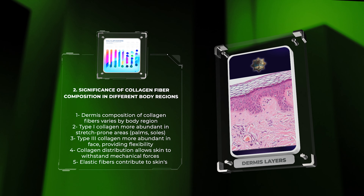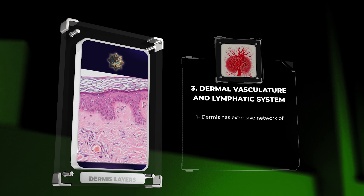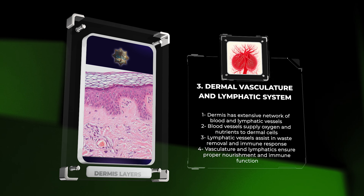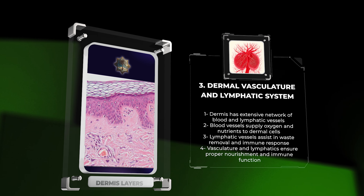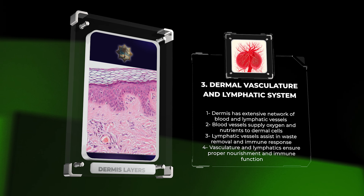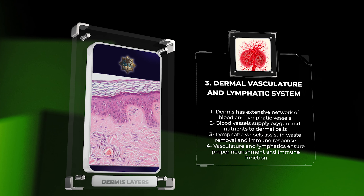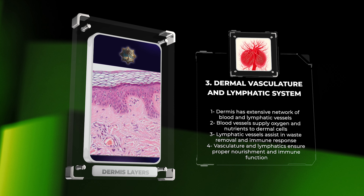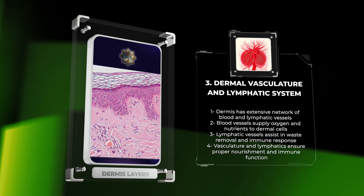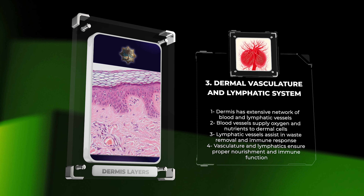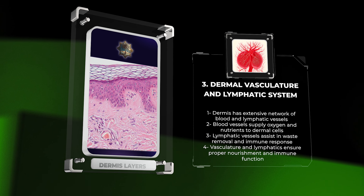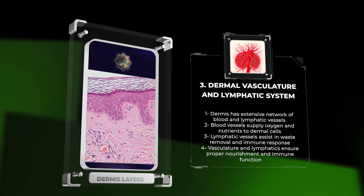The dermis possesses an extensive network of blood vessels and lymphatic vessels, contributing to its vital physiological functions. Blood vessels supply oxygen and nutrients to the dermal cells, while lymphatic vessels assist in the removal of waste products and immune surveillance. The intricate vasculature and lymphatics in the dermis ensure proper nourishment, waste removal, and immune response.